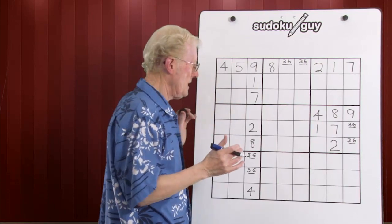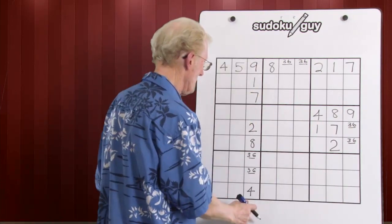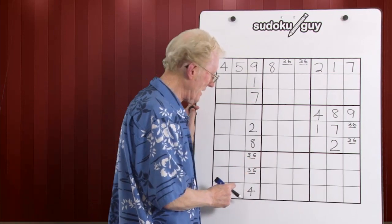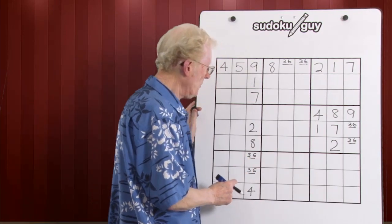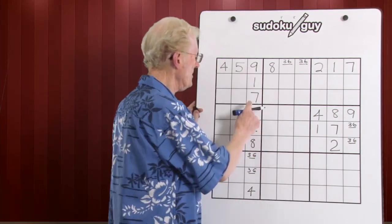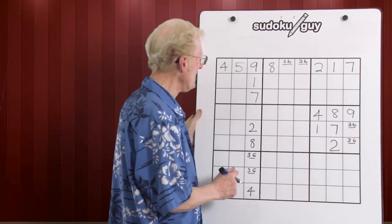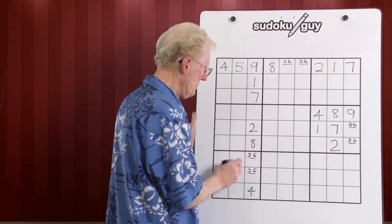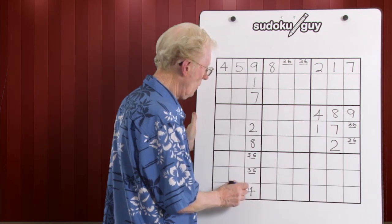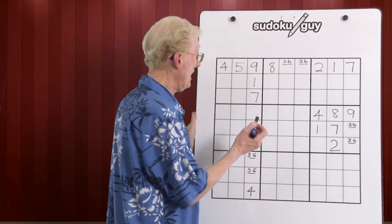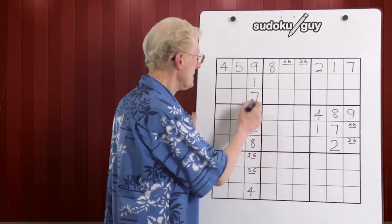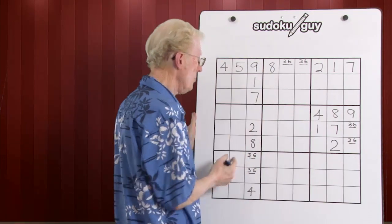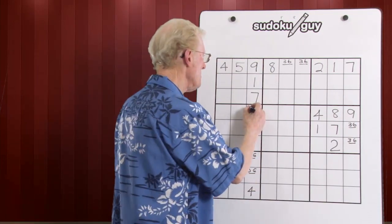Now let's take a column. We've got a column where you have a three, six, three, six matching pair. The way to find out what the missing cell is — simply do the same sort of thing but with a column. One, two, this is a three, four, five is missing, six, seven, eight, nine. So the five that was missing goes there.